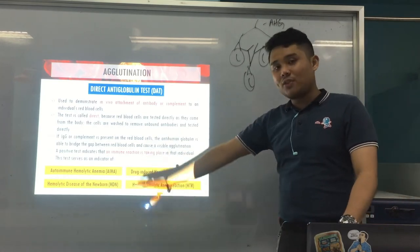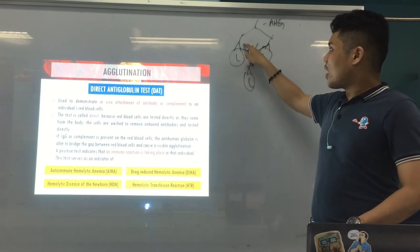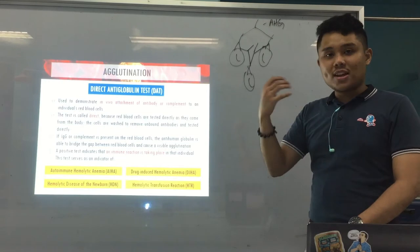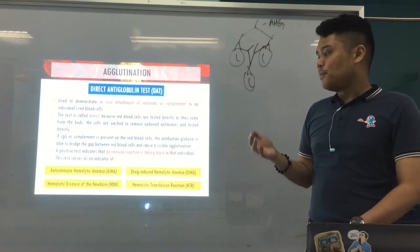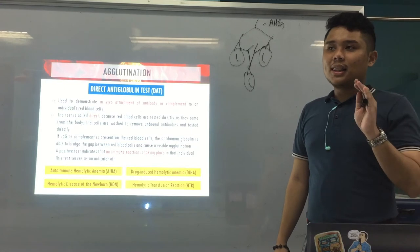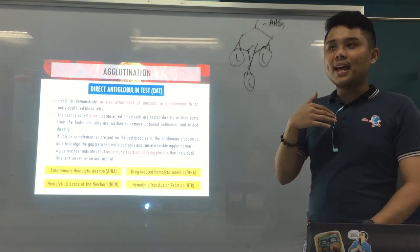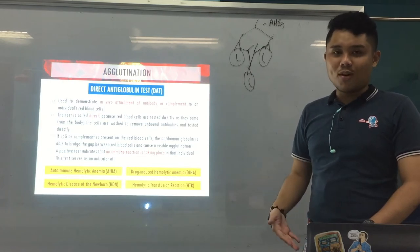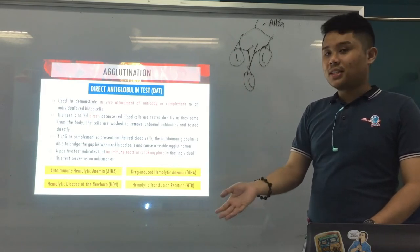The DAT is an indicator of these diseases: autoimmune hemolytic anemia — where autoantibodies coat your RBCs and can lead to hemolysis; and hemolytic disease of the newborn — where IgG from the mother crosses the placenta and attacks the RBCs of the fetus, leading to hemolysis.